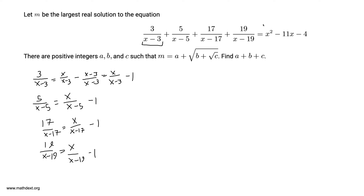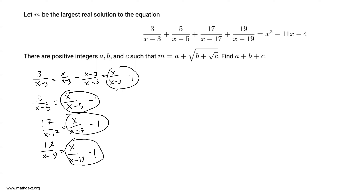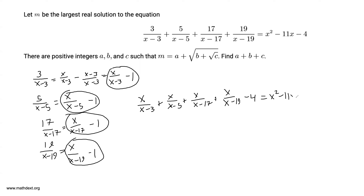So where does that bring us? The left-hand side is the sum of these four fractions, so adding them together we get x/(x-3) + x/(x-5) + x/(x-17) + x/(x-19) - 4. We're given this equals x² - 11x - 4. We see negative 4 on both sides, so we can add 4 to both sides and get rid of that negative 4.